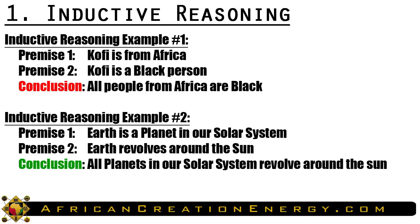An example of inductive reasoning. Premise one: Kofi is from Africa. Premise two: Kofi is a black person. Conclusion: all people from Africa are black. In this example, we have used two specific observations — Kofi is from Africa and Kofi is a black person — and using inductive reasoning come to a generalized conclusion. However, the general conclusion is not always true, because it is possible for people to be from Africa and not be black.